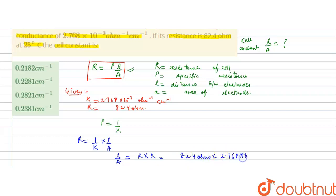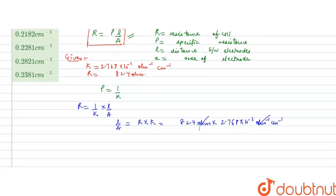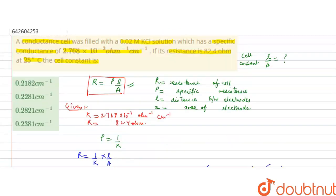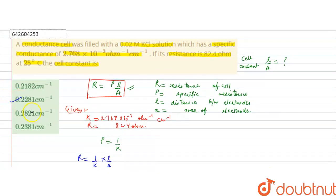The ohm⁻¹ cancels with ohm, so the cell constant will be in cm⁻¹. Multiplying these values gives cell constant = 0.2281 cm⁻¹.